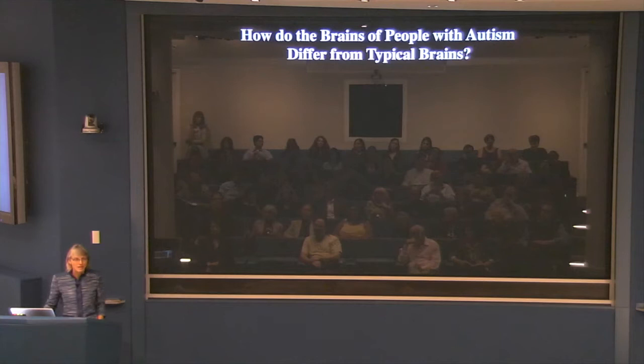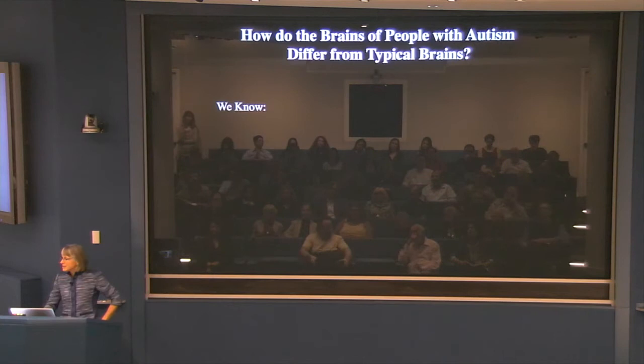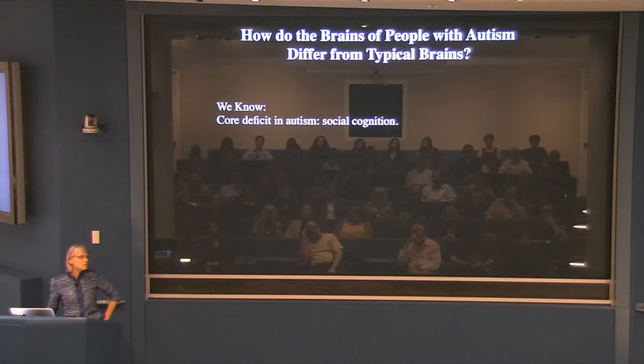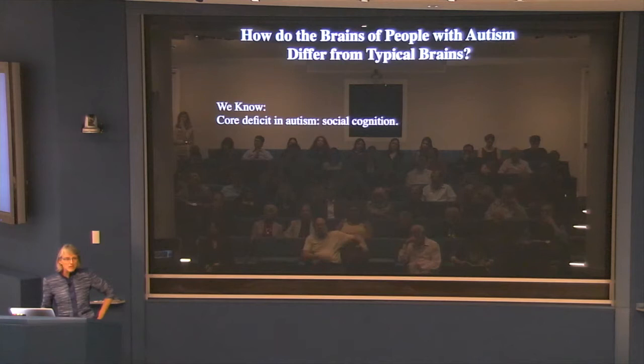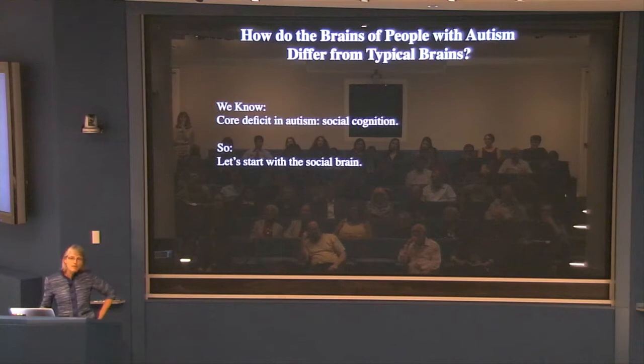I don't think I'm going to give you a very satisfying answer, but I'll tell you about my efforts to date. One of the things we know about autism from its very definition is that at the core it's a deficit in social cognition. There are other phenomena — attentional effects, motor effects, repetitive behaviors — but social deficits are really at the core. So I'm going to focus on the social brain, parts of the human brain involved in different aspects of social cognition.